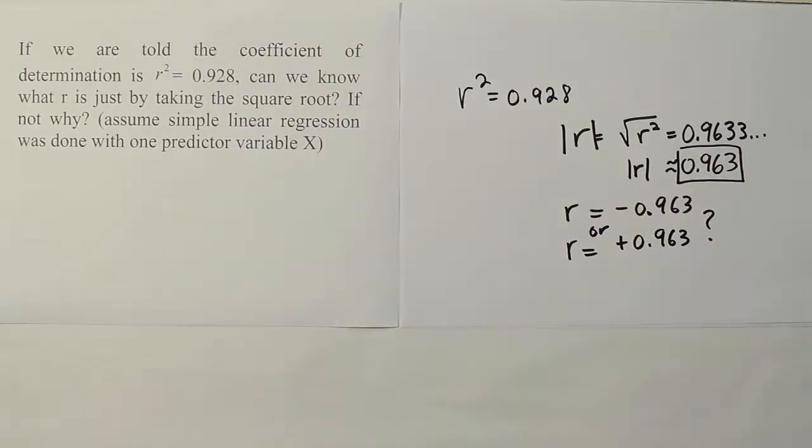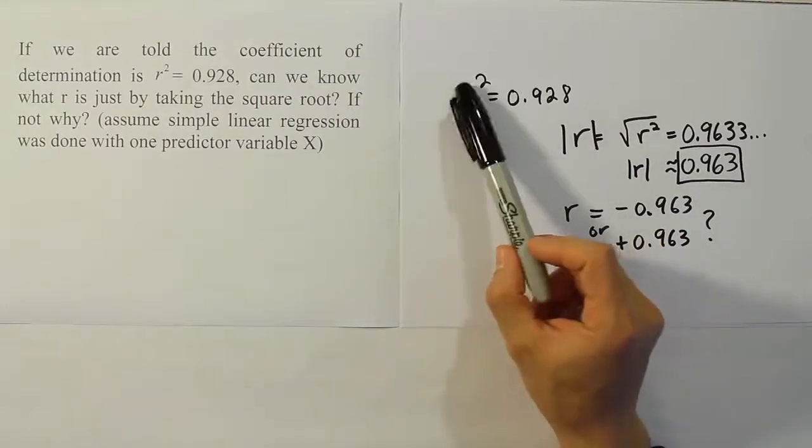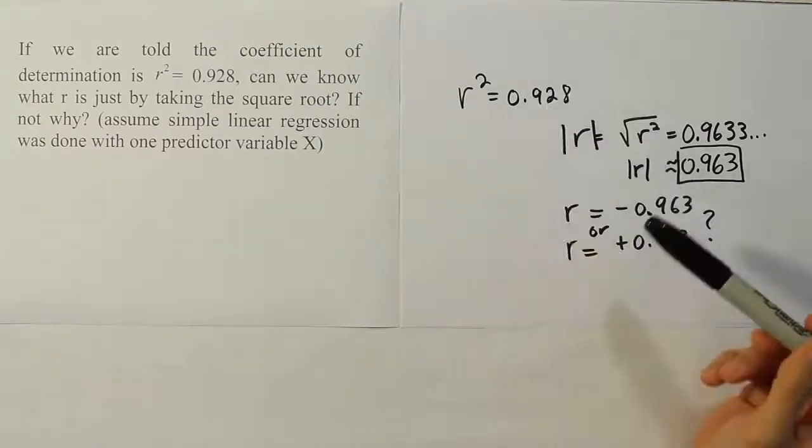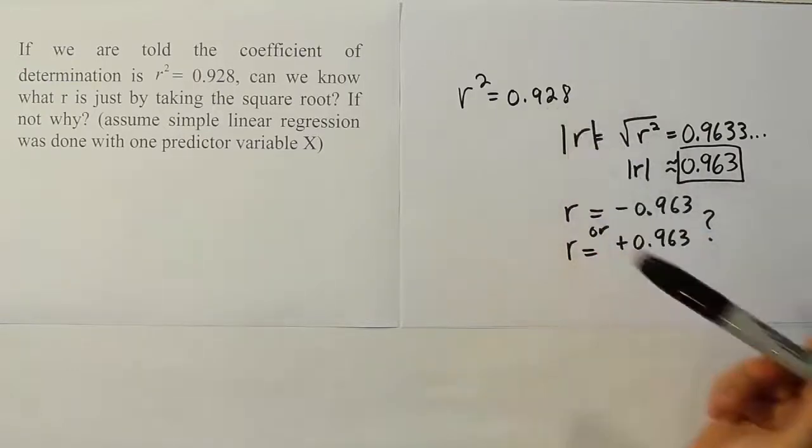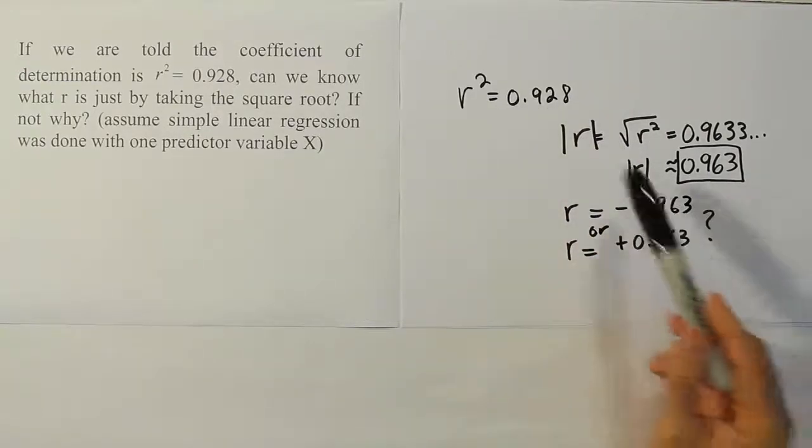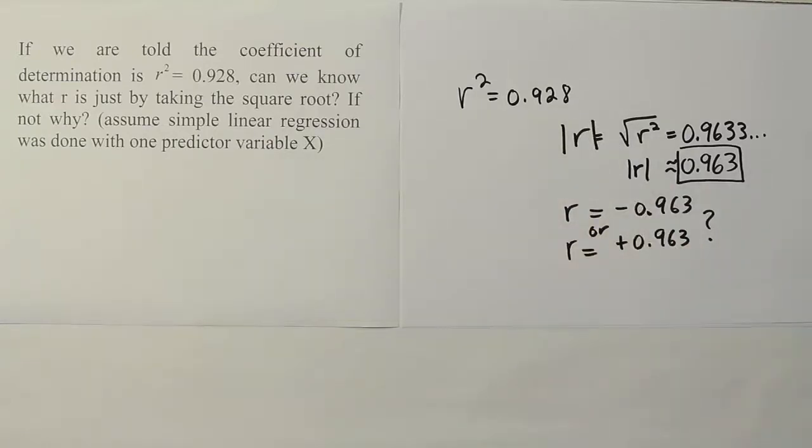We don't know which one is true. The reason why we don't know which one is true is because obviously any number squared is going to be positive. So if they had taken this number and squared it, they would have gotten 0.928. Just like if they took this number and squared it, they would have gotten 0.928.